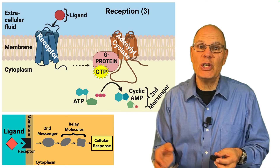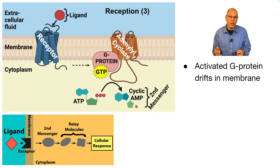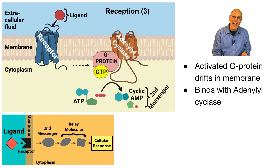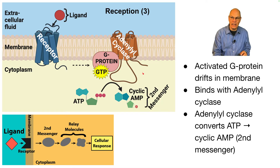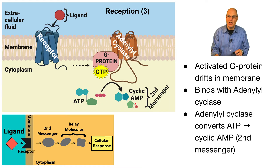So what happens to the G protein once it's bound with GTP? It drifts in the membrane and ultimately binds with adenylyl cyclase, this membrane-embedded enzyme, and activates it. Adenylyl cyclase's substrate is ATP, and it converts ATP into a molecule called cyclic AMP, which is the second messenger in these G-protein-coupled receptor systems.